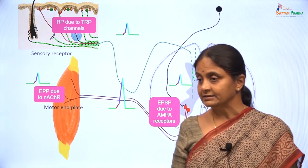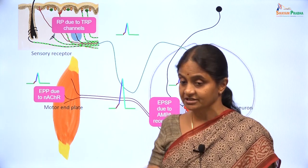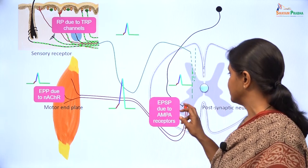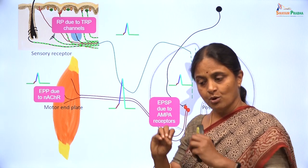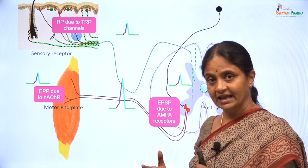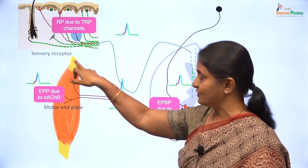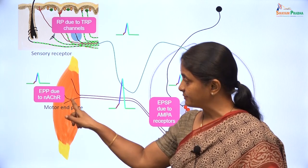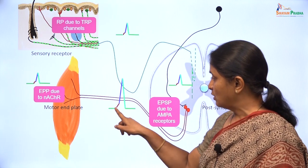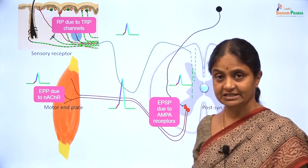The next important thing to understand is that these channels — be it the glutamate receptors, acetylcholine receptors, or the transient receptor potential channels — these channels responsible for the early depolarization are located only in those specific sites. Those non-specific cation channels are not found along the length of the neuron or the rest of the muscle. The nicotinic acetylcholine receptor is located only at the motor end plate. If that is the case, we have to understand what causes the early depolarization along the length of the axon and along the rest of the skeletal muscle cell.